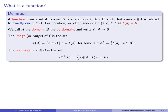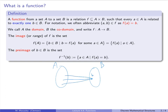The preimage of an element b in the codomain is the following set. We write it as F⁻¹(b). I'm not saying that this is actually a function — I'm not saying F inverse. This is the notation we use, and we define it to be the set of elements a in the domain such that F(a) = b. Pictorially, we're taking an element in the codomain and looking at everything in the domain that gets mapped to it.